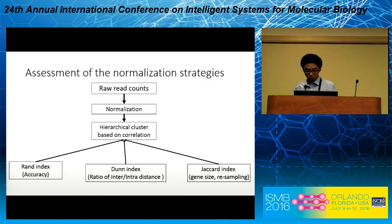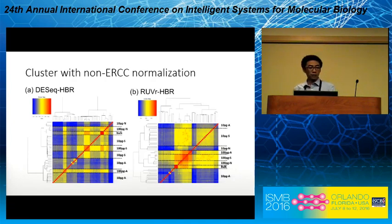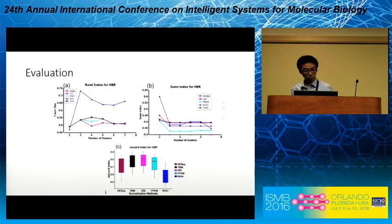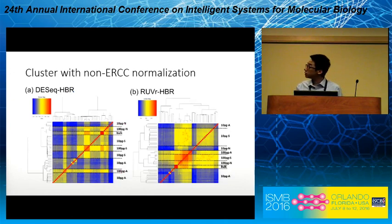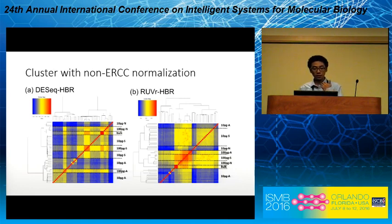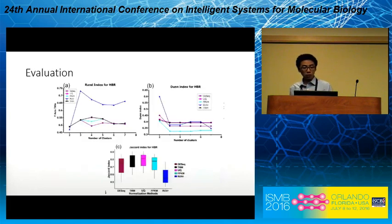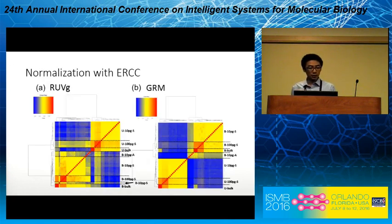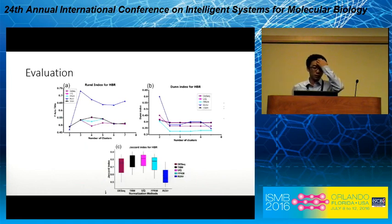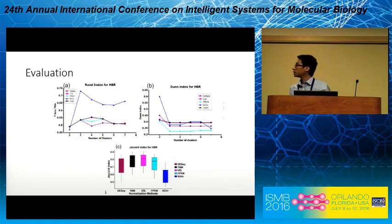First, we normalize with the no-ERCC methods. We can see that for DESeq on HBR, the data is clustered according to the sequencing method first, then amount. But for the ROVR method, the data is clustered according to amount first, then the strategy, which means ROVR has better performance than DESeq. Using the statistical indices, we can also see that ROVR is consistently higher than other methods. However, from the Jaccard index, ROVR scores lower than the others, which means ROVR is more sensitive to gene sets and sampling than other strategies.